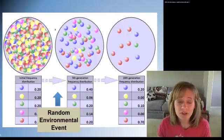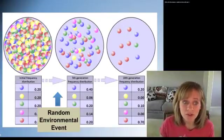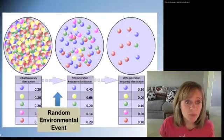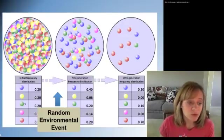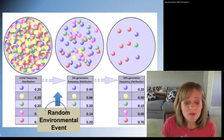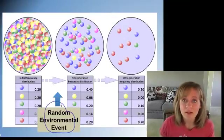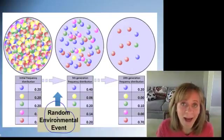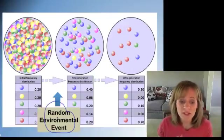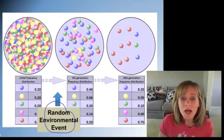Here's a graphic to show you how bottleneck effect works. Here we have our original population and sort of equal amounts of blue, yellow, green, pink, red individuals. And then we have this random environmental event, not adaptive at all, totally by chance that this happened. And it could be anything. And look at what happened.